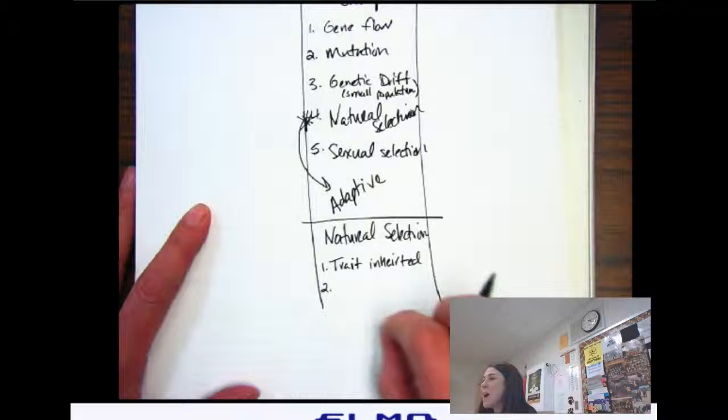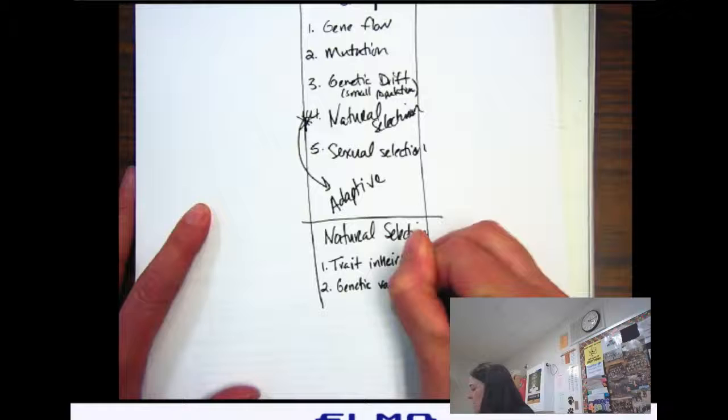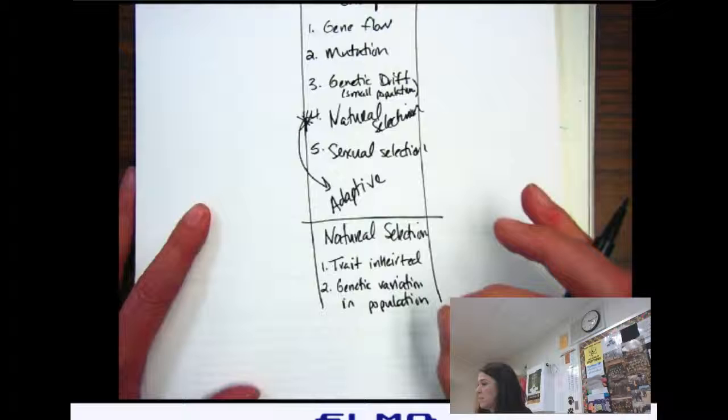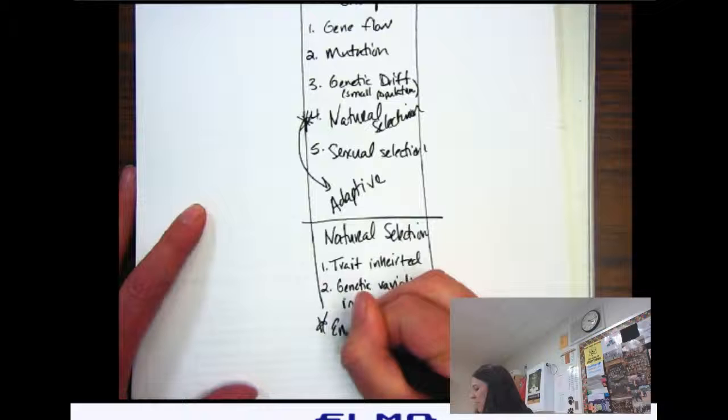Secondly, in the population there needs to be genetic variation in the population to begin with. And that has to be there first. Now, then, now what happens?